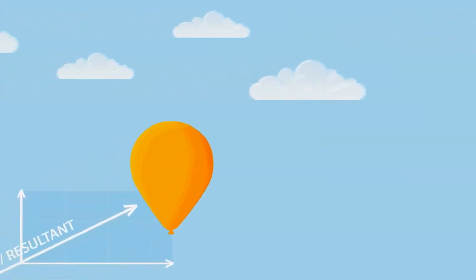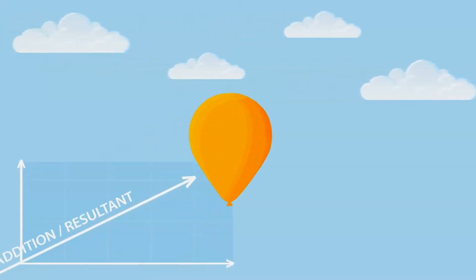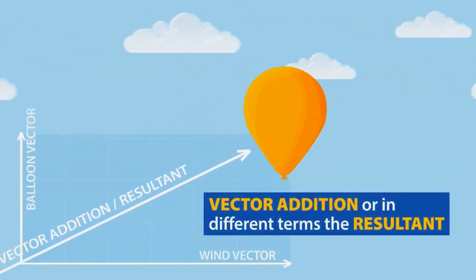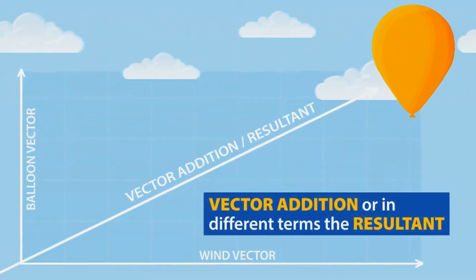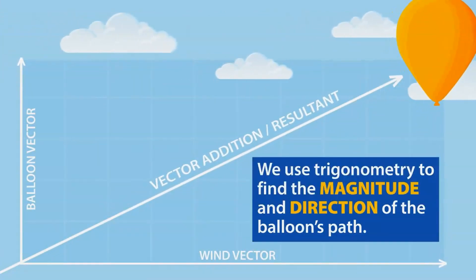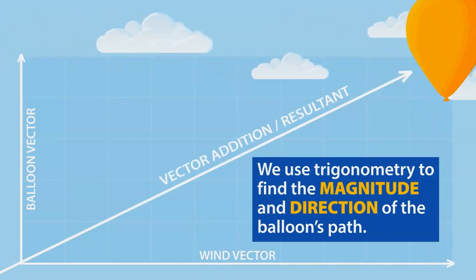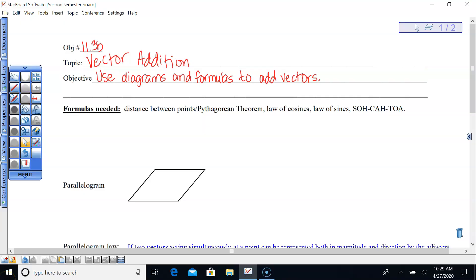If the balloon is released in the wind, the combined effect results in a path that represents vector addition, or the resultant. We use trigonometry to find the magnitude and direction of the balloon's path if it's released in the wind — an example of vector addition.